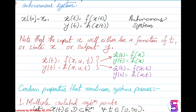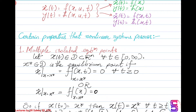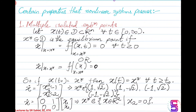Let us see some properties that certain non-linear systems might possess but no linear system will ever possess. One of them is the existence of multiple isolated equilibrium points. A point x* in domain D is said to be an equilibrium point of the system if ẋ = 0 at x = x*, meaning f(x) = 0 for autonomous systems, or f(t, x) = 0 for all t ≥ 0 for non-autonomous systems. x* is said to be the equilibrium point.